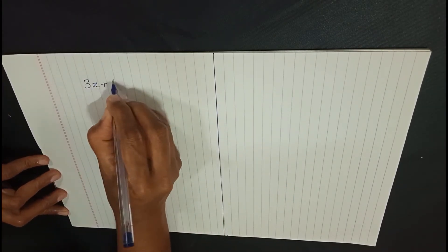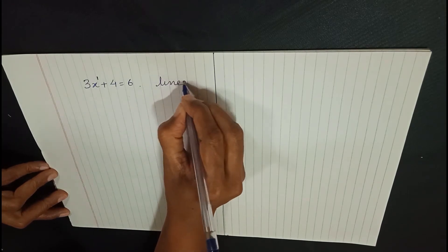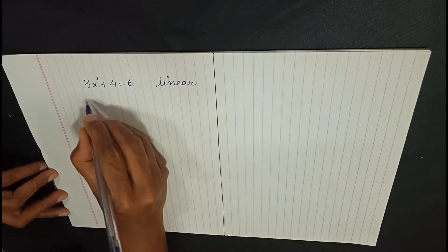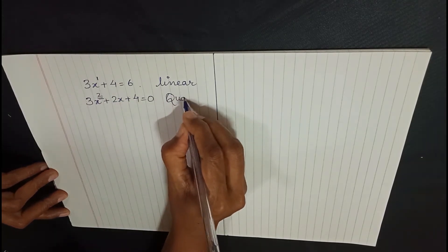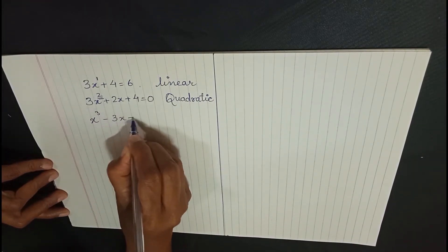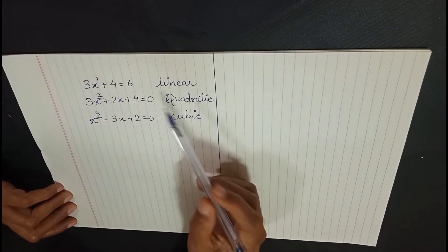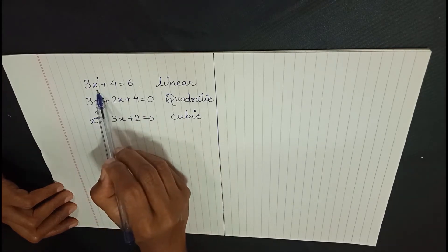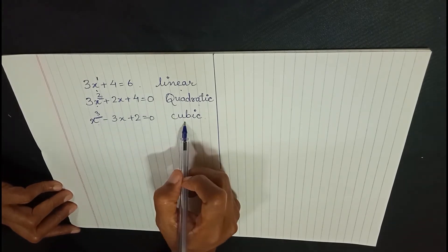The next topic is naming an equation depending on its highest degree. If the highest degree is 1, it is called a linear equation. If the degree is 2, it is called a quadratic equation. If the degree is 3, it is called a cubic expression. So: degree 1 → linear polynomial, degree 2 → quadratic, degree 3 → cubic, and so on.